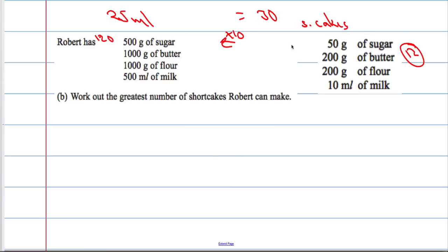200g of butter to 1000g of butter, well that is only 5 times as much. 200g of flour and 1000g of flour, that is also 5 times as much.